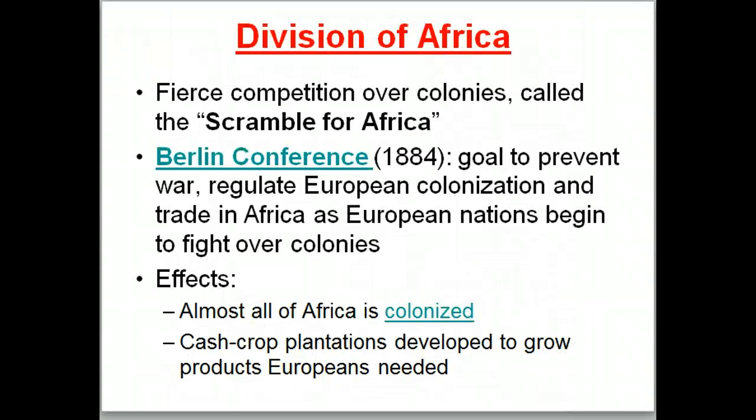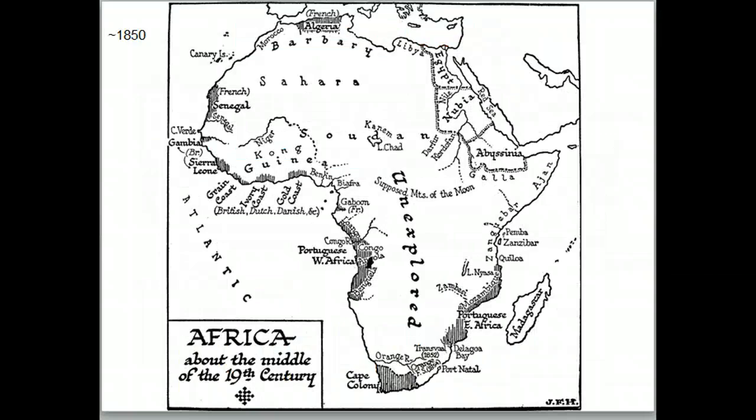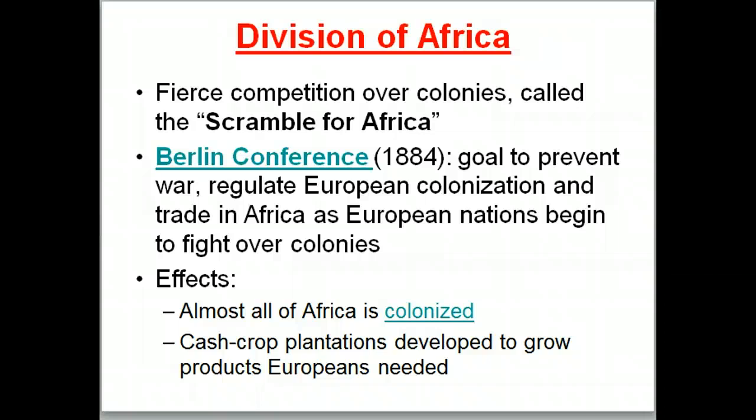How did they end up dividing Africa? Once they had coastal footholds, they engaged in the Scramble for Africa — fierce competition for colonies, like everyone grabbing slices of a cake. This led to the Berlin Conference, where Otto von Bismarck called all European powers together to figure out how to divide Africa. They drew borders on a map to prevent wars between European nations and regulate colonization and trade. The effects: almost all of Africa was colonized and cash crop plantations were developed, dramatically changing native economies.